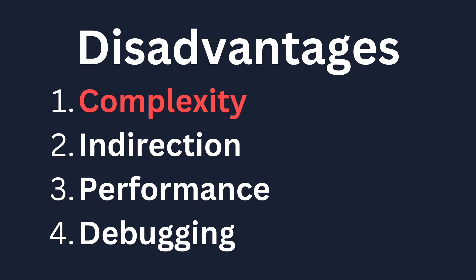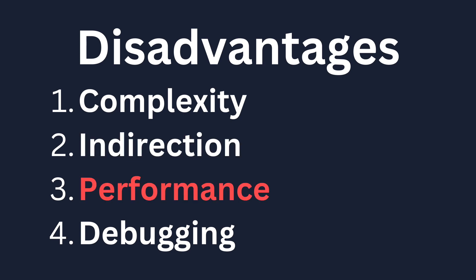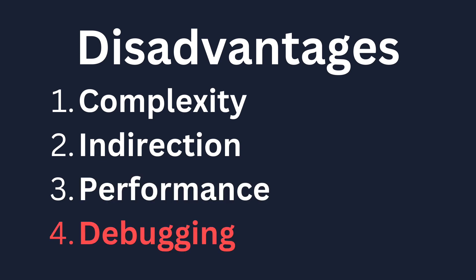The disadvantages of Dependency Injection are complexity — it can add complexity to an application by requiring extra setup and configuration. It can introduce indirection, making code more difficult to follow and understand. It can have a negative impact on performance because of the overhead of resolving dependencies at runtime. And because the flow of dependencies is less clear, it can make it more difficult to debug an application.